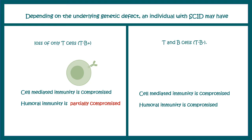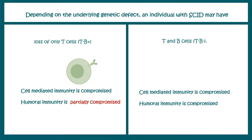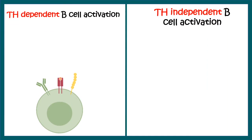In the first case — where only T cells are absent — cell-mediated immunity is totally compromised and humoral immunity would be partially compromised. In the next case — where both T cells and B cells are absent — both cell-mediated and humoral immunity would be completely compromised.